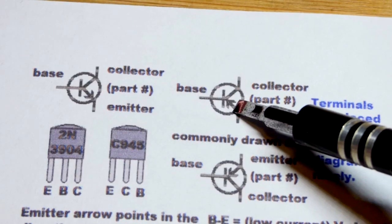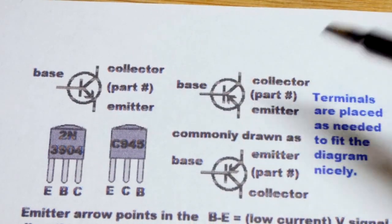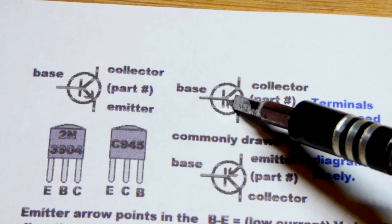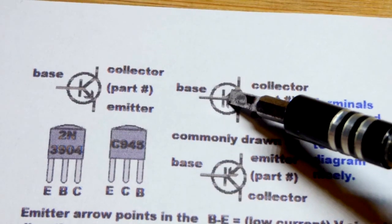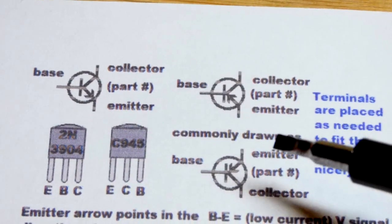So we've got a PNP bipolar junction transistor. The arrow is pointing in. And I don't know that there's a saying for that, but you can see the arrow is pointing in towards the base.